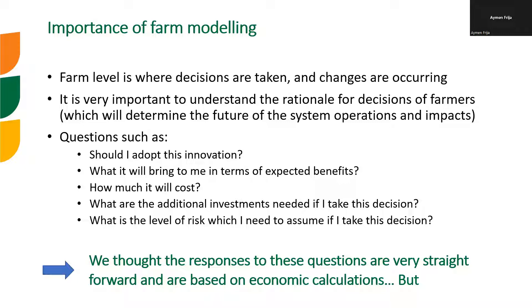It's very important to understand the rationale for decisions of farmers, because these decisions would have strong implications on other levels — either the landscape level or the plot level — and the biophysical interactions within the plot and between the different components of the system: crop, soil, erosion, nitrogen depletion, organic matter, growth within the soil, fertility.